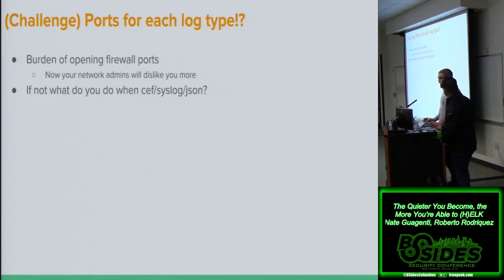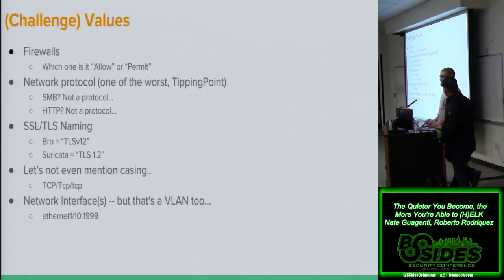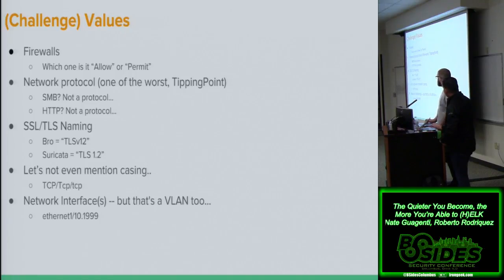There's also the challenge of differentiating between a Bro log, a Windows log, a DNS Windows log, a Palo Alto firewall log, and a Cisco ASA firewall log — now you have to open a port for each, which puts a burden on network admins. Then there are value inconsistencies: is it 'allow' or 'permit'? Tipping Point says SMB is a protocol, but that's just TCP, UDP, ICMP. SSL/TLS naming — is it a space or a dot? Network devices are some of the worst for this.